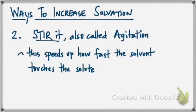The second way to increase solvation is to stir it. Now the fancy term is called agitation. So in agitation, this essentially just speeds up how fast the solvent touches the solute. Because again, you're trying to get those to run into each other because the solvent will dissolve the solute. So if you stir it, it's going to speed up that process.